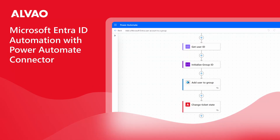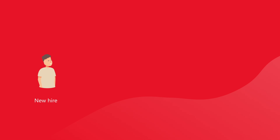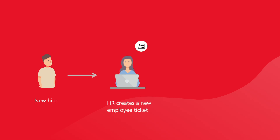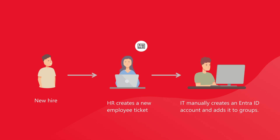Introducing Microsoft EntraID Automation with the Power Automate Connector. Employee onboarding is a routine process. Once a candidate is hired, HR creates an Alvow ticket, triggering tasks like setting up accounts and access in EntraID.